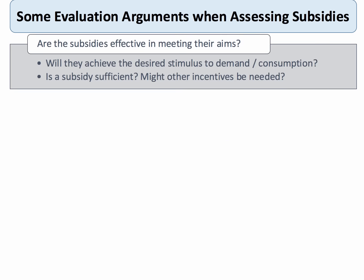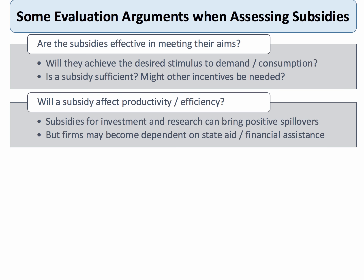Let's evaluate the effectiveness of subsidies as a form of intervention in markets. First, one could question whether a subsidy is actually effective in meeting its aims. For example, does a childcare subsidy actually have much effect on the affordability of childcare? It could be a supply-side problem rather than a demand-side issue. Is the subsidy sufficient, or might other incentives be needed?